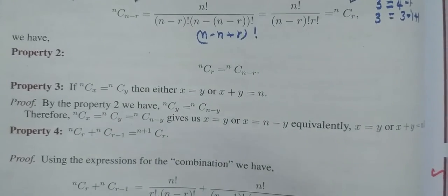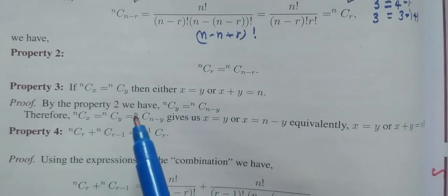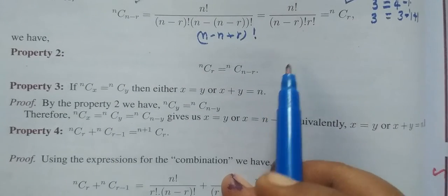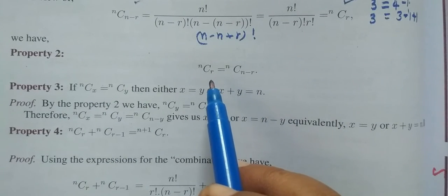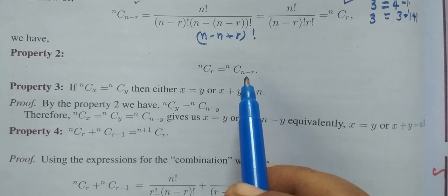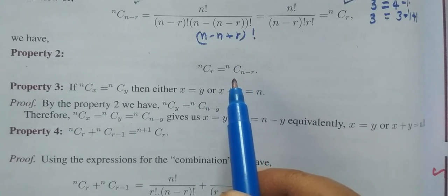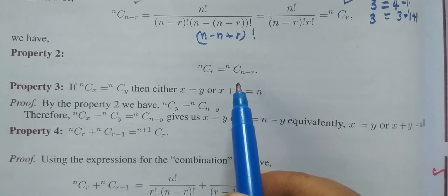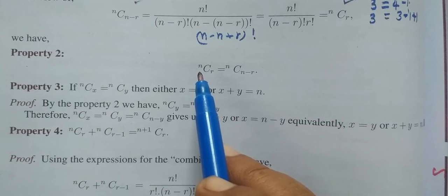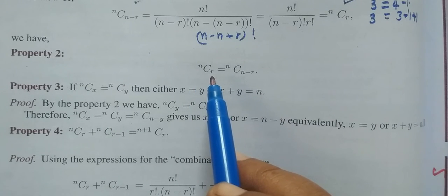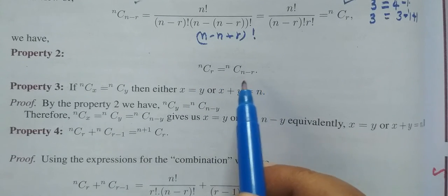In the video, property 2, we will say that ncr is equal to ncn-r. That is the numerator and denominator term. You just do the separative.